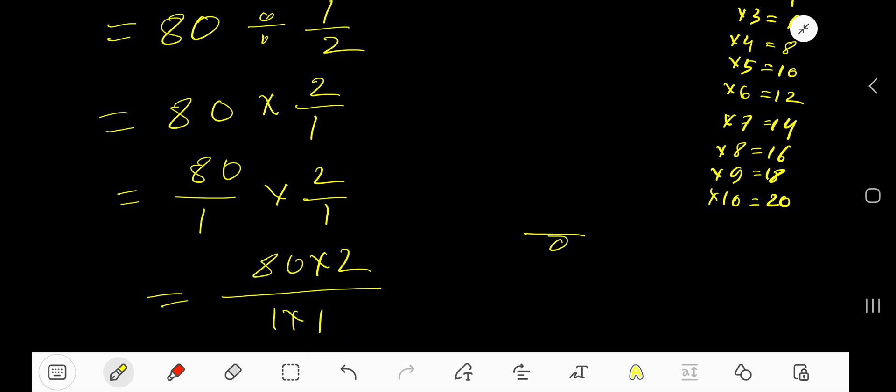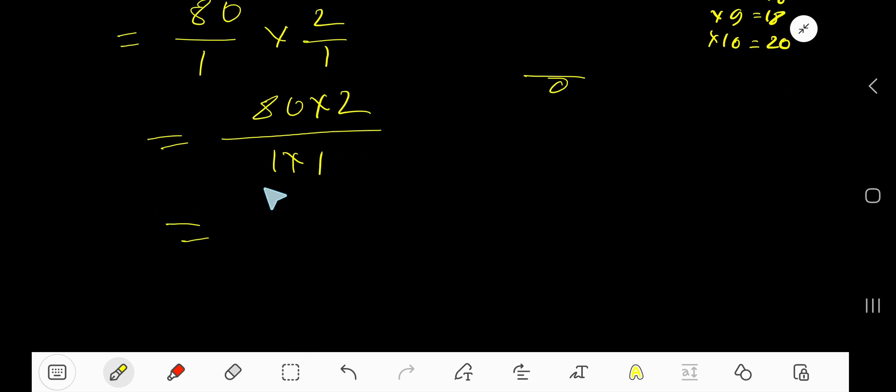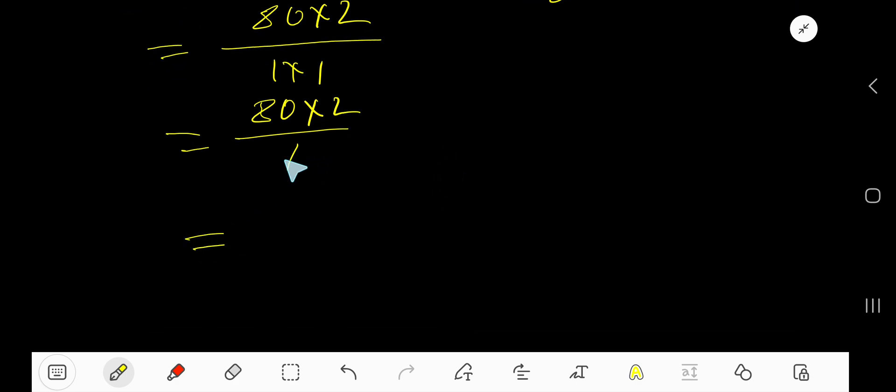So we are getting 80 times 2, 1 times 1 means 1. That is, to divide this by 1, you will get 80 times 2. 80 times 2 equal to what? 2 times 0 is 0, 2 times